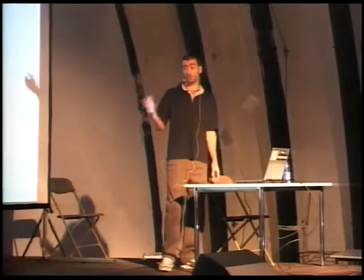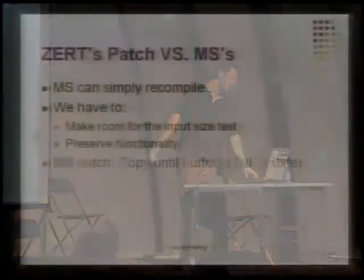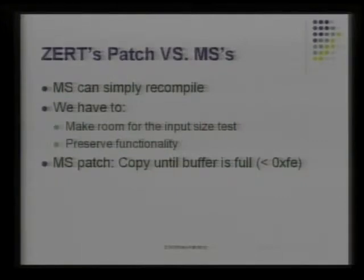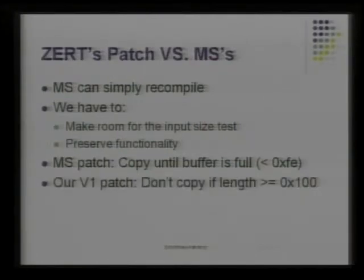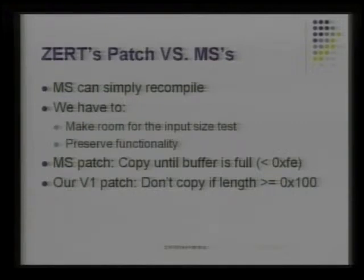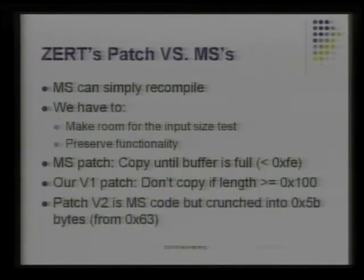Microsoft can simply look at their code, see the vulnerability, and recompile the source with their own C or C++ patch. For us it's a big headache — we have to make room for the input size test. We added a few instructions for the comparison and the branch, and now we have to take the code, make room inside it, and put the size validation in while preserving the functionality of the PTOC parser-tokenizer. Our version 1 patch says: don't copy the buffer if it's too long. If it's too long, there's a reason and it's probably the zero-day.